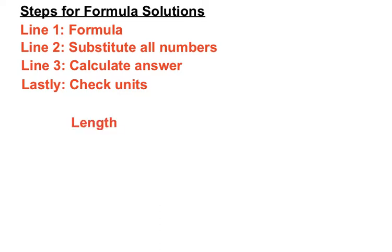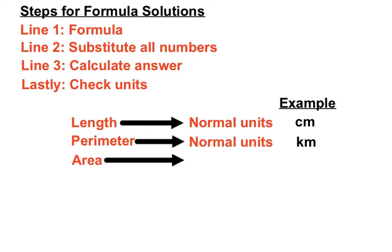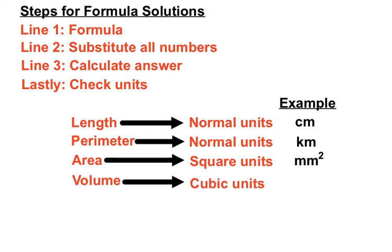As far as the units go, our length has normal units such as centimeters or millimeters. Our perimeter does too because perimeter is just adding up all the lengths. But when we get to area questions, we'll be using square units like millimeters squared or centimeters squared. And with volume, we'll be looking to use cubic units such as meters cubed.